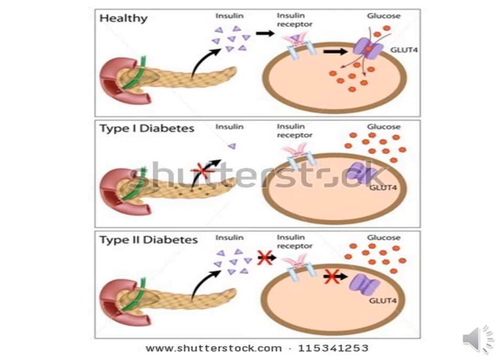This diagram helps us understand the types better. In a healthy individual, insulin secretion is normal and action on insulin receptors drives glucose uptake and utilization. In type 1 diabetes, insulin secretion is minimal, so glucose uptake and utilization is very low. In type 2 diabetes, insulin secretion may be normal, but insulin resistance means the transducer mechanisms cannot perform properly, resulting in no uptake and utilization of glucose.